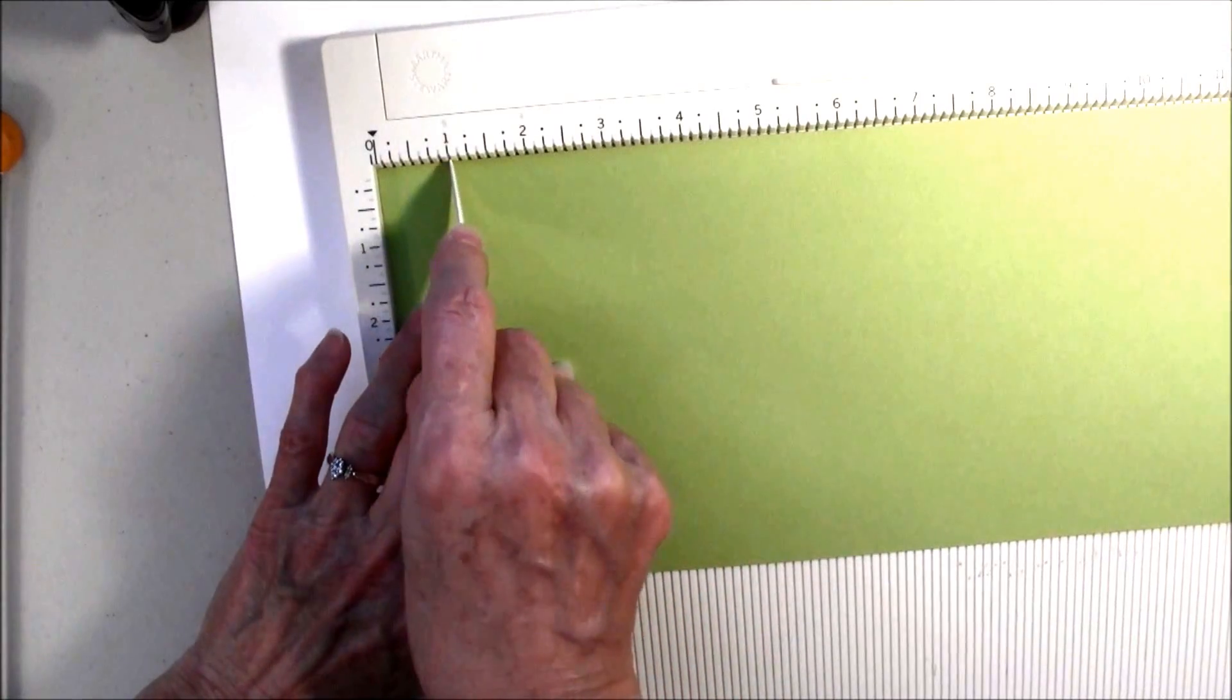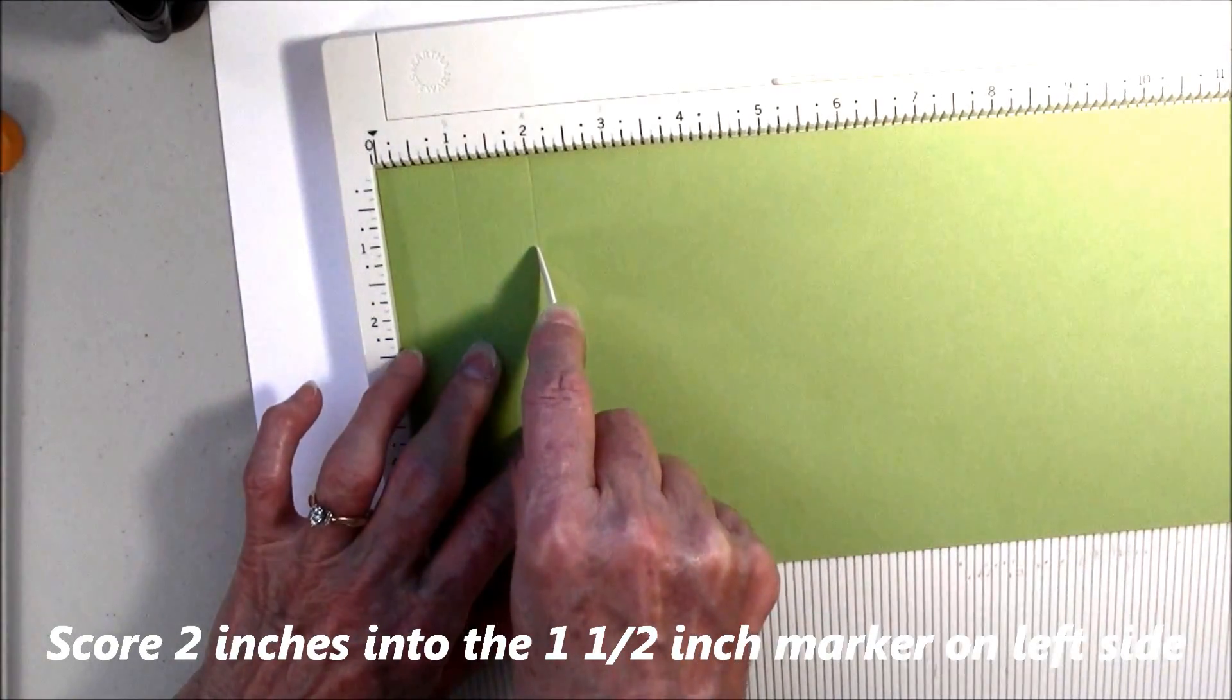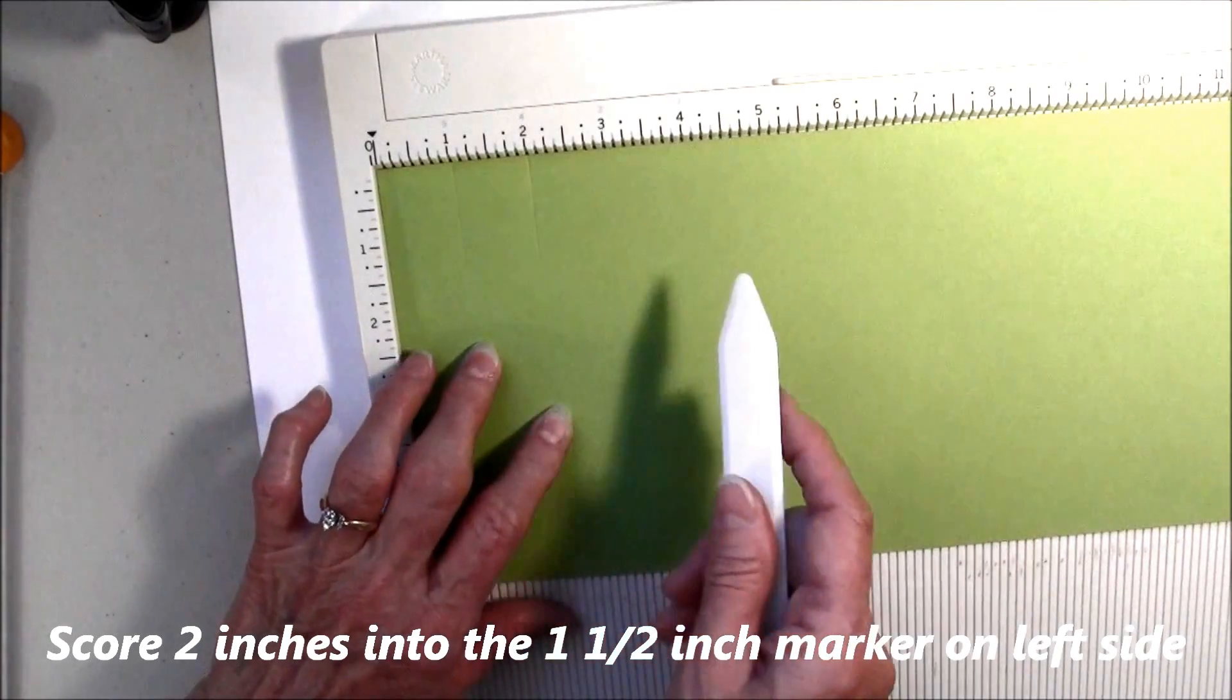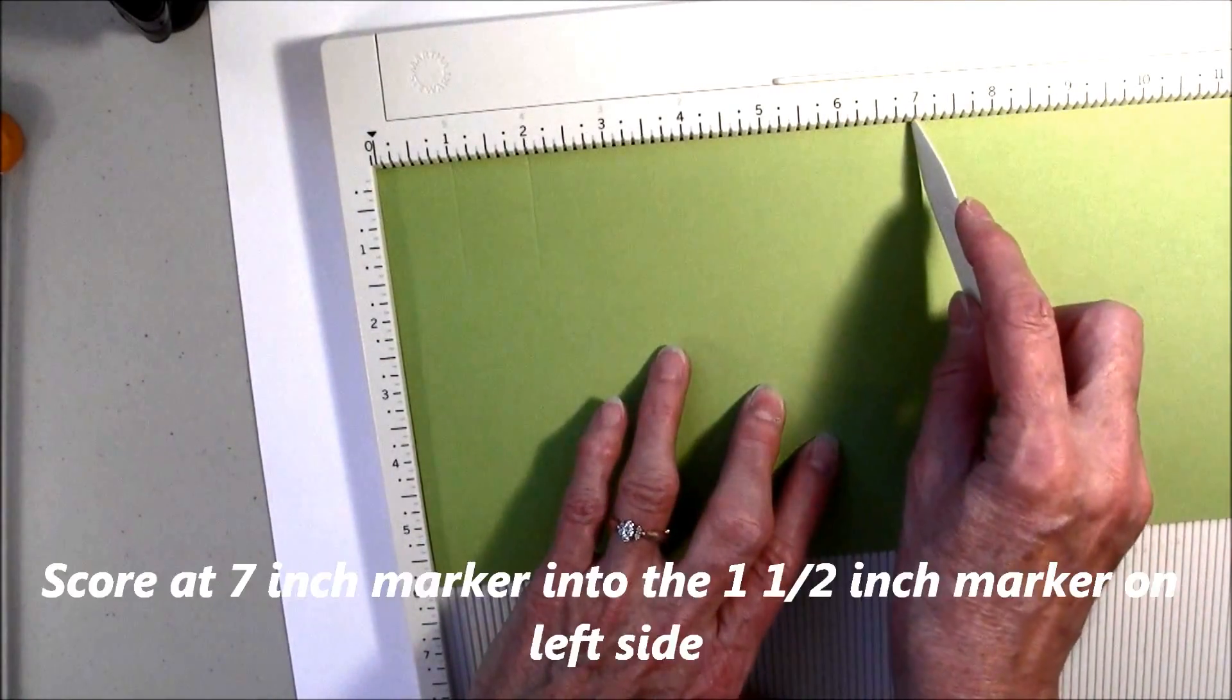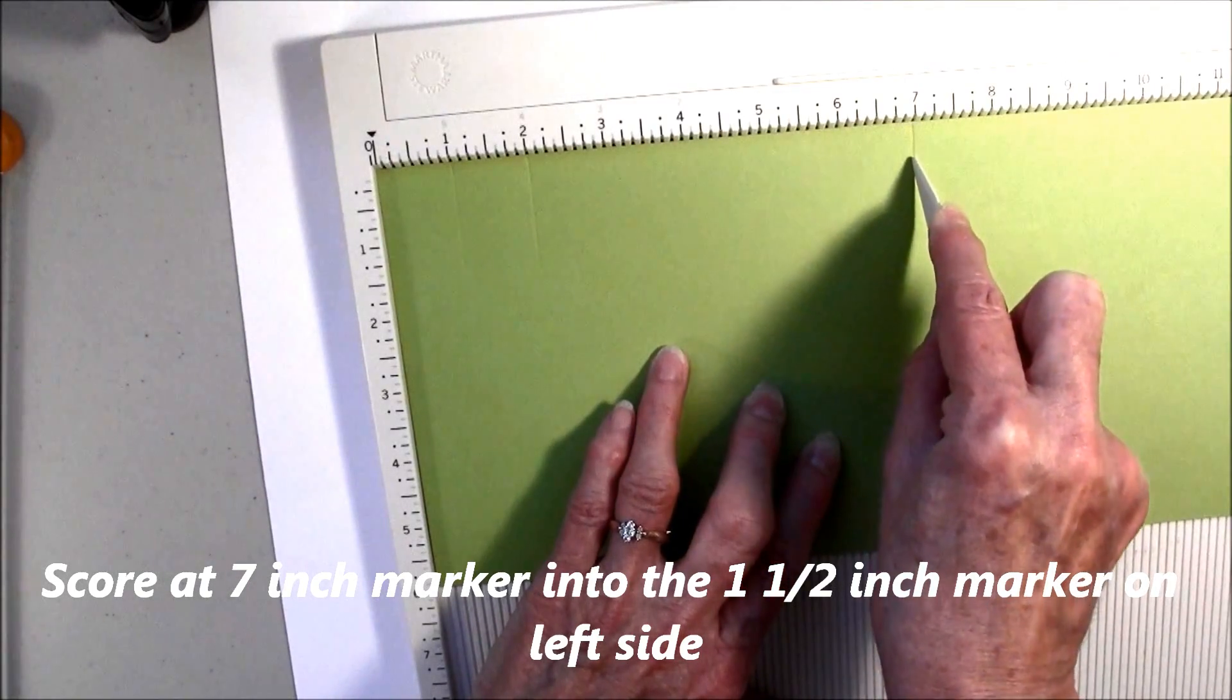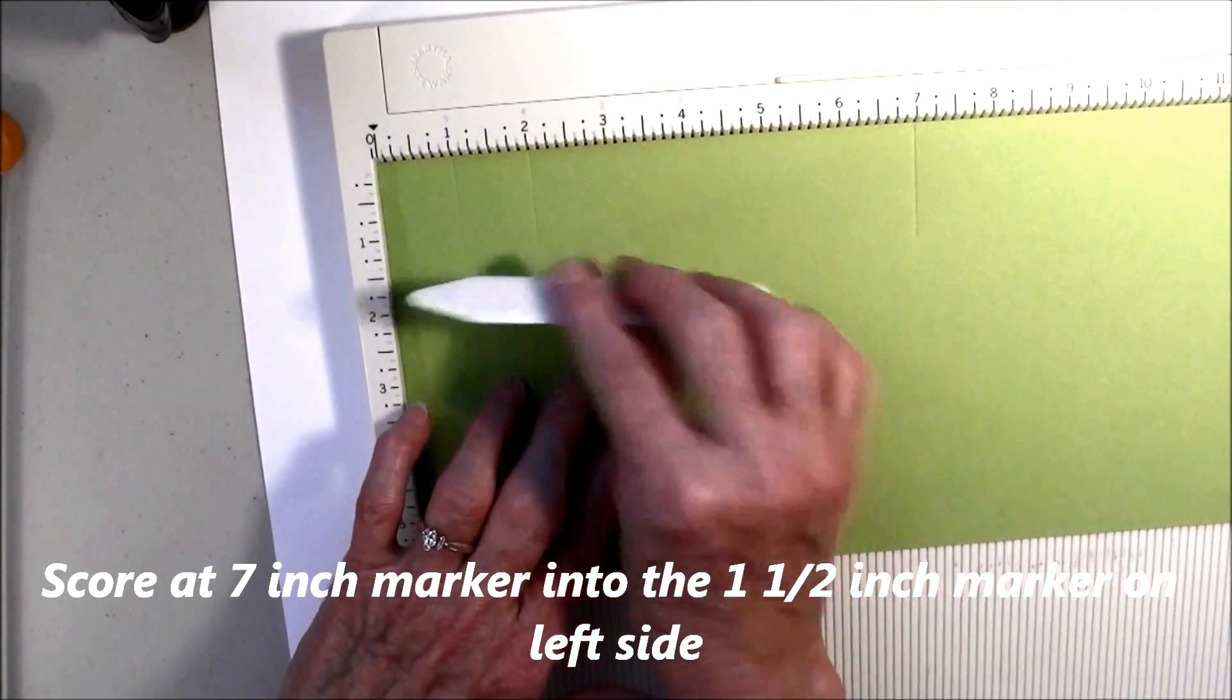So, you're going to score at the 1-inch mark, all the way into the 1½ spot here, because you want it to go 1½ inches in. And then you're going to score at the 2-inch spot, same way, all the way in to the 1½ spot. And then you're going to score at the 7-inch spot, again, going in 1½ inches.